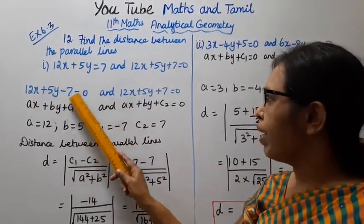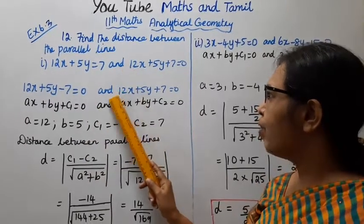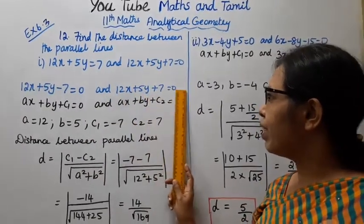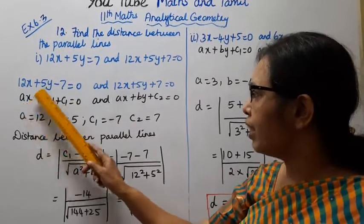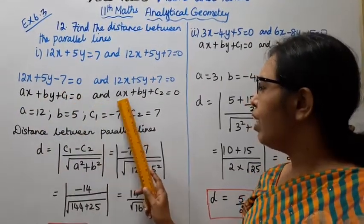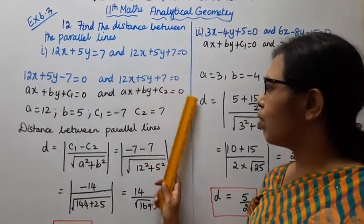12x plus 5y minus 7 equal to 0 and 12x plus 5y plus 7 equal to 0. This is Ax plus by plus C1 equal to 0. This is Ax plus by plus C2 equal to 0.